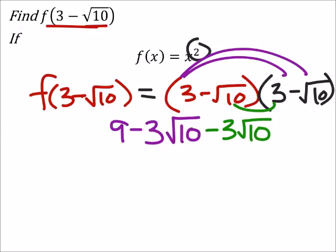Then finally, minus—this is a minus times a negative, so I'm going to make that a plus. Square root of 10 times the square root of 10 is 10.